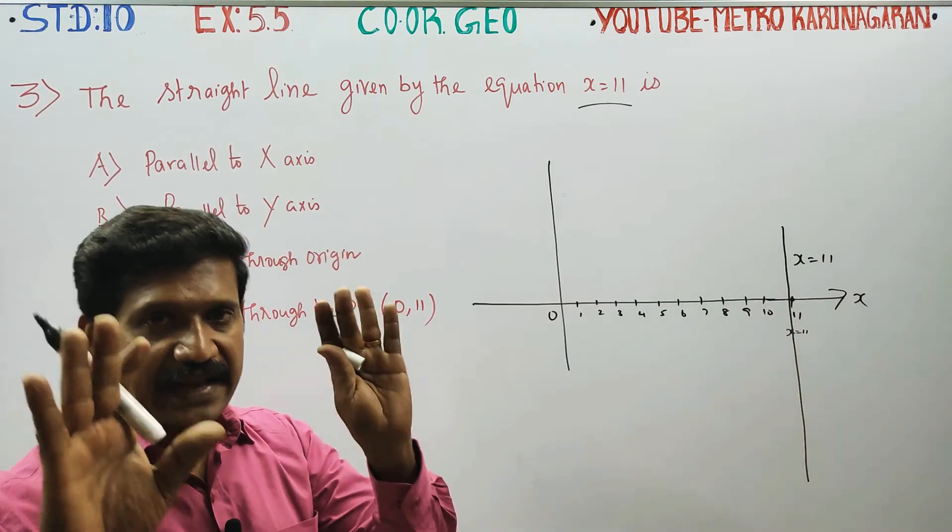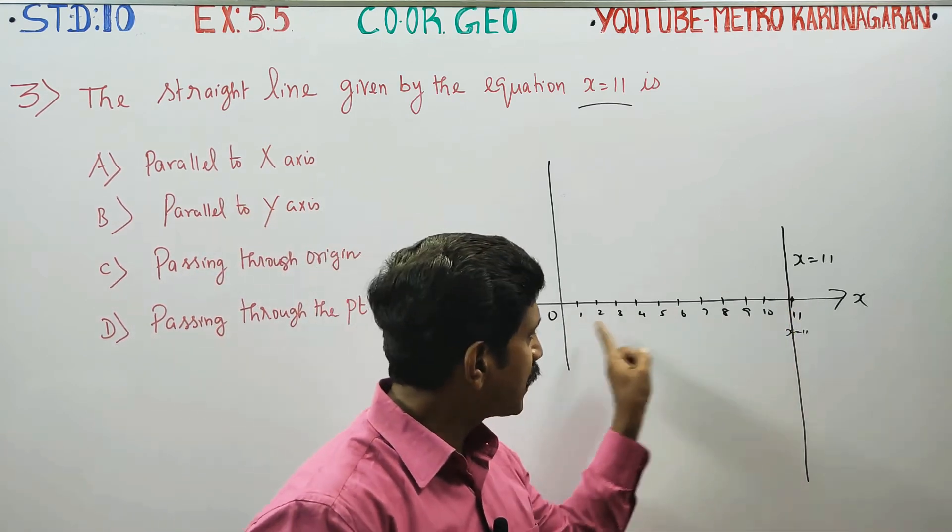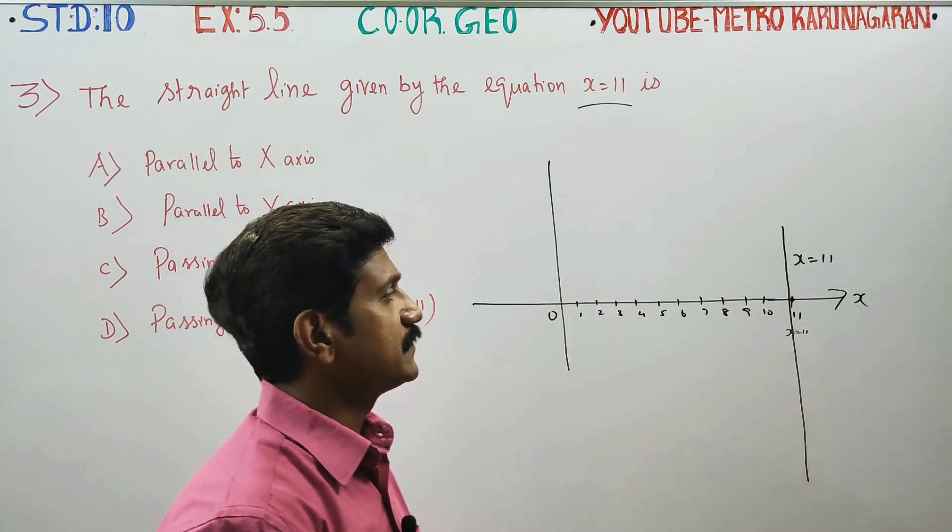X equals 11 graph, where I am going to tell you, the straight line, that is the straight line. The line is the straight line, number 1.